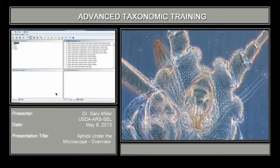You can see the tubercles right there. In this case they're much higher than the frons, which is that center portion of the head. Remember when I said how Aphis gossypii had a smooth head? You can see that here Myzus persicae has a lot of scabrous areas all through it — not only on the dorsum, but on the venter.